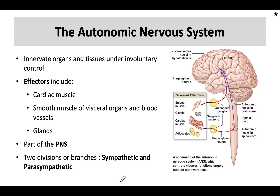The autonomic nervous system innervates organs and tissues under involuntary control. These commonly include cardiac muscle, smooth muscle of the visceral organs and blood vessels, as well as glands. The autonomic nervous system is a branch of the peripheral nervous system, with the second and third branches being the somatic motor nervous system and the sensory system.